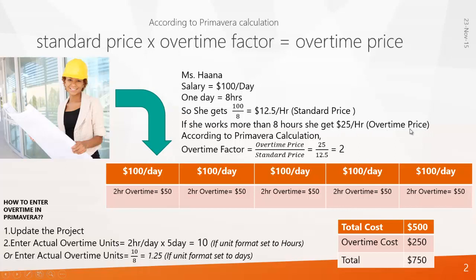So according to Primavera calculation, you can calculate the overtime factor, which is equal to overtime price divided by standard price — that gives you two. So you need to set the overtime factor as two for the resource Miss Hannah.